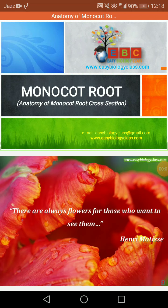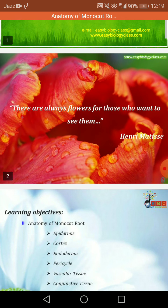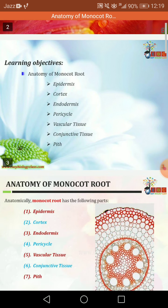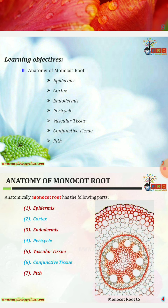Assalamualaikum wonderful people, today we will discuss the anatomy of monocot root cross section. Today's learning objectives are the anatomy of monocot root, including epidermis, cortex, endodermis, pericycle, vascular tissues, conjunctive tissues, and pith.